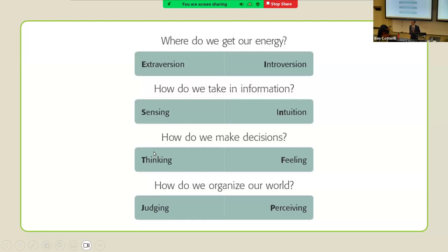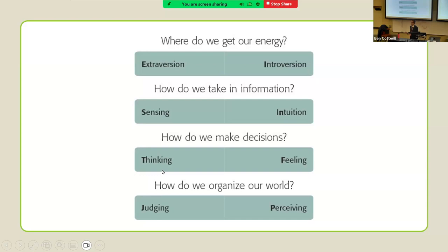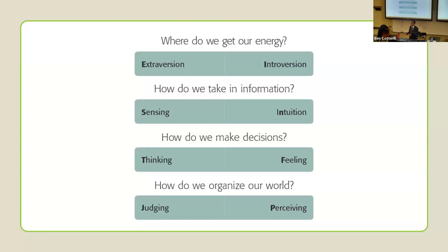Thinking versus feeling: do you make decisions based on hard logic and data, or subjective feelings? A good example: imagine you're a manager told you need to let someone go. A thinking type would need an objective way — looking at number of sales and removing the person with the least. A feeling type would look at subjective data: if I get rid of this person, what would that do to morale in the workplace and how would it affect people's feelings? And judging versus perceiving: do you like to be orderly and prepared, or do you prefer to adapt and live spontaneously in the moment, like winging a holiday versus having a day-by-day planner?